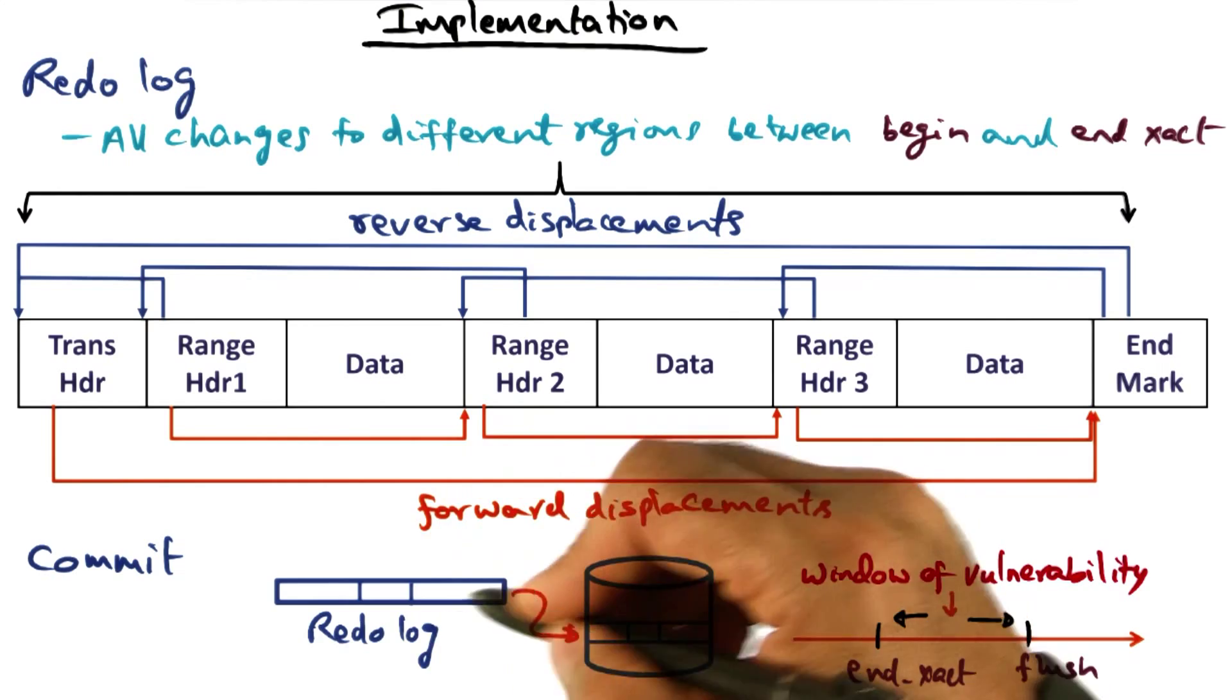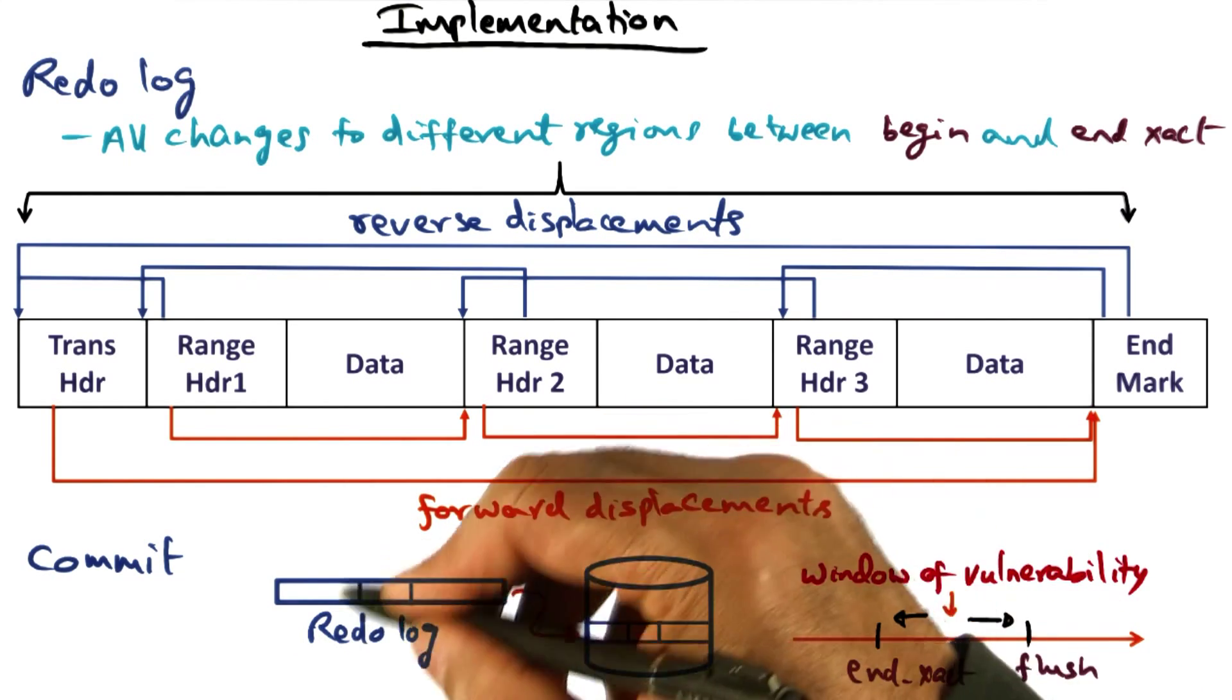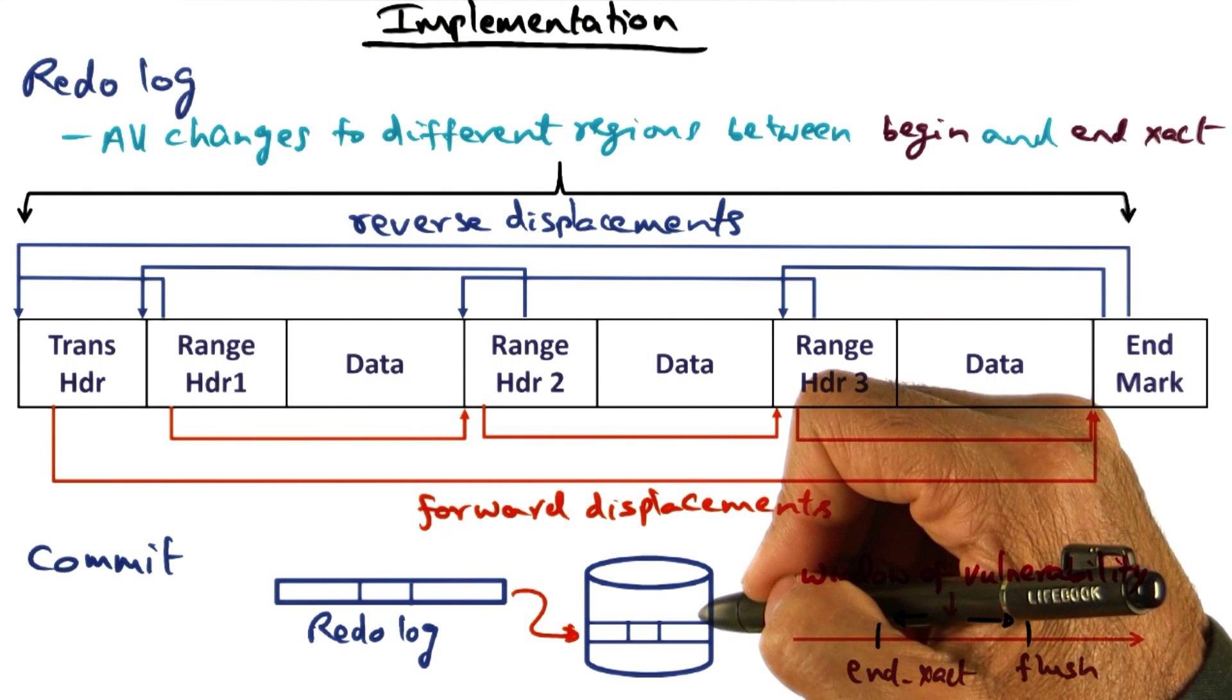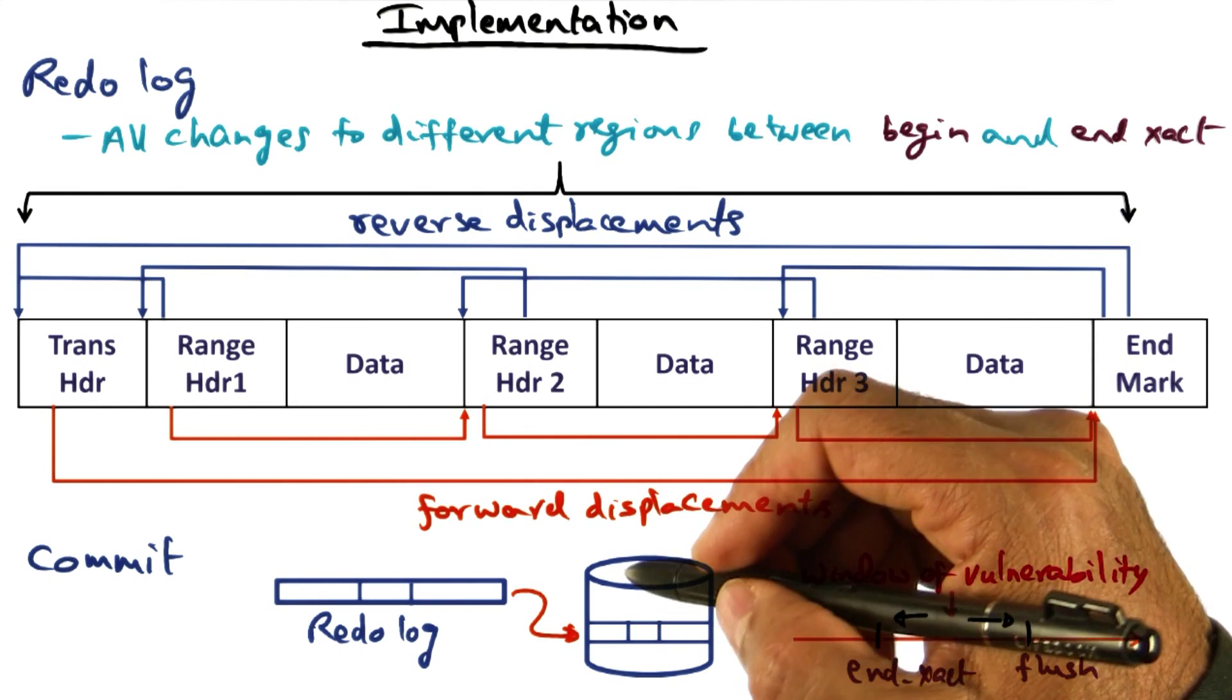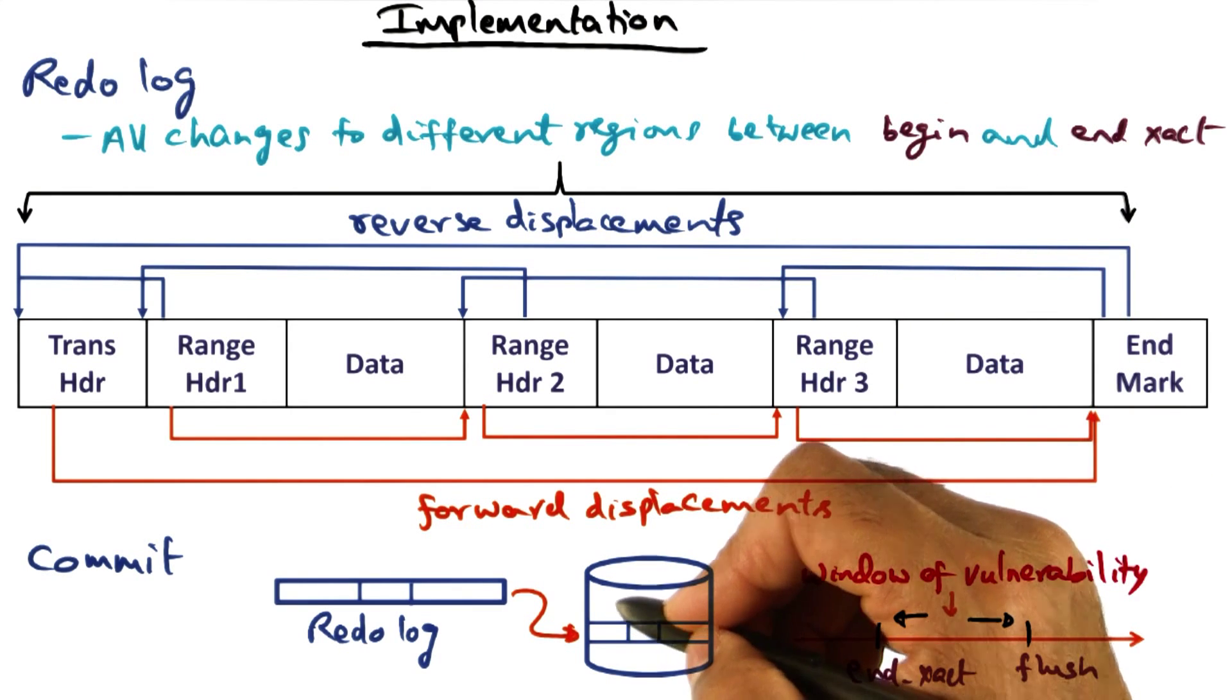Similarly, no flush at commit point tells RVM that it can write the redo log to the disk lazily and does not have to block the process making that call, the end transaction call. That is an opportunity again to make the implementation more performance conscious.